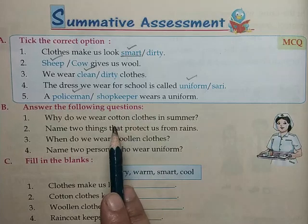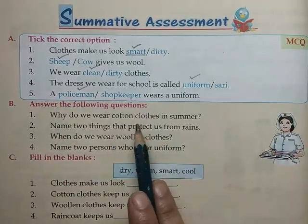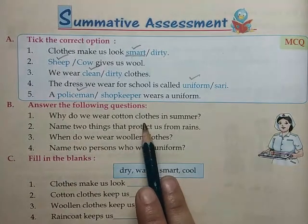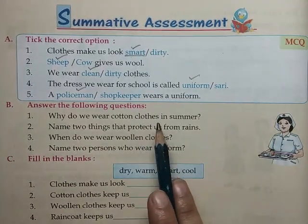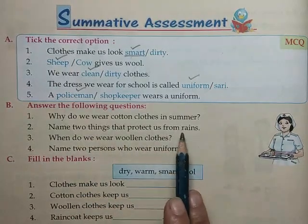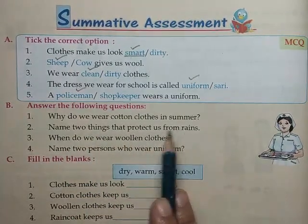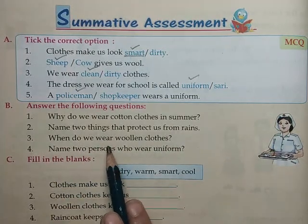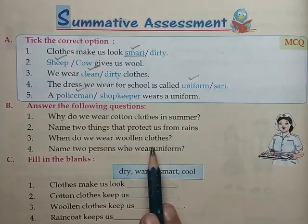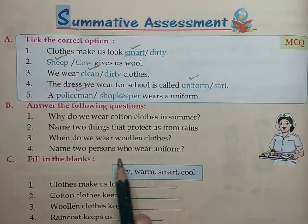Answer the following questions: Why do we wear cotton clothes in summer? Name two things that protect us from rain. When do we wear woolen clothes? Name two persons who wear uniform.